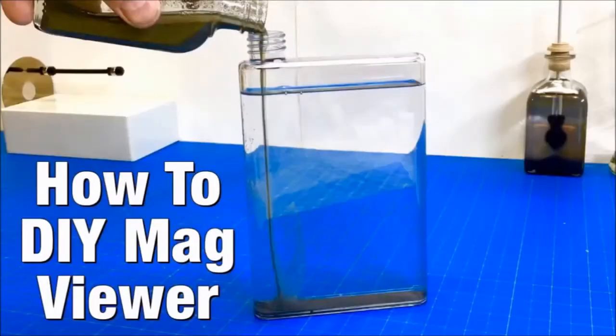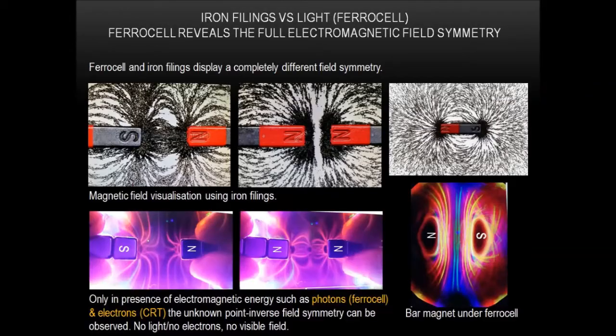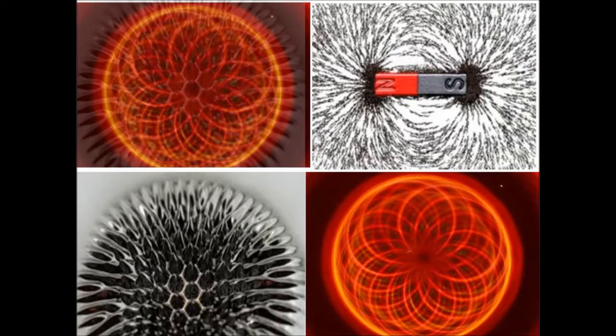It's not woo-woo science — this is very provable and being shown right here. You can see the different principles of energy fields reacting in three-dimensional forms. Once we get into the flower and tree of life, you're going to see amazing principles from just putting a magnet under some ferrofluid. But let's get into paramagnetism and the difference between that and diamagnetism.